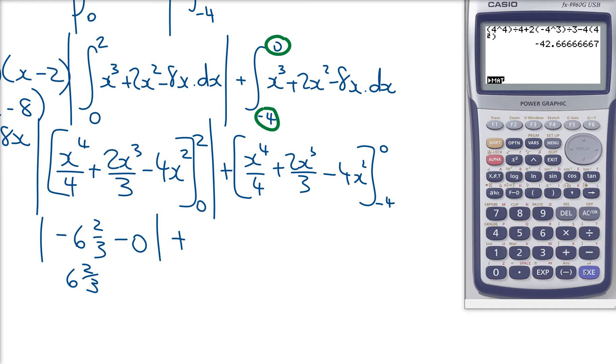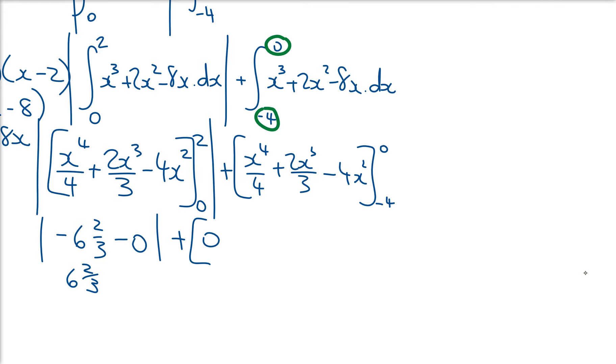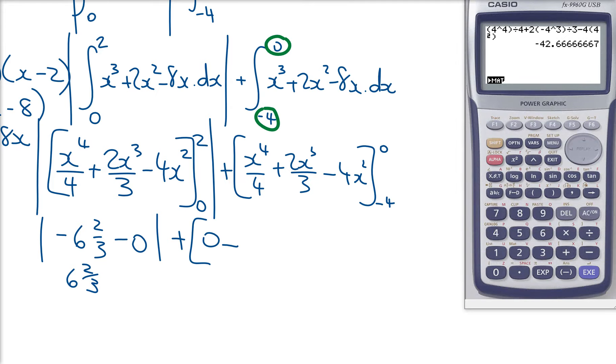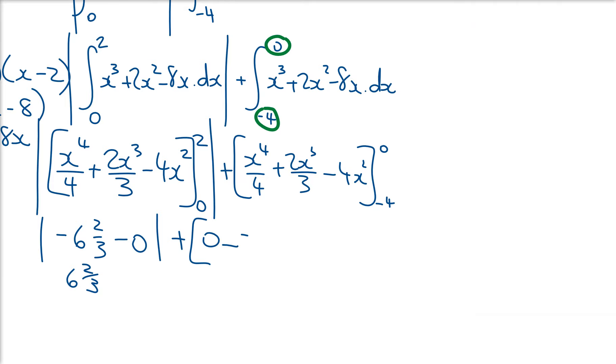So here we're going to be adding on zero minus negative 42 and 2/3. Okay, so we've got 6 and 2/3 plus 42 and 2/3, which is equal to 49 and a third. 49 and a third. Happy with that?